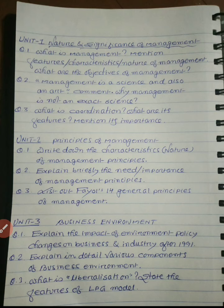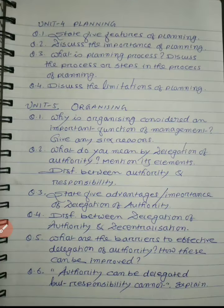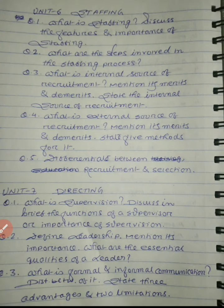Then unit number three: Business Environment — three questions given, so read those. Then unit number four: Planning — four questions given, so read those. Then unit number five: Organizing — six questions given, and from this unit one question will come for eight marks. Remember that, students.